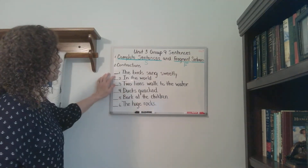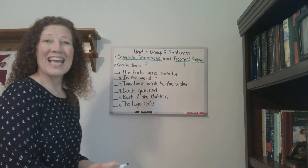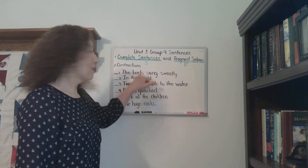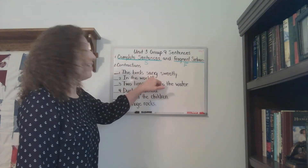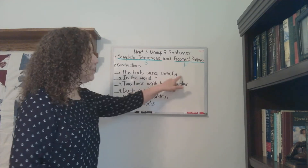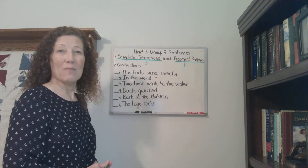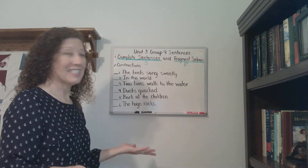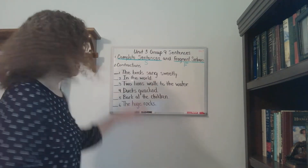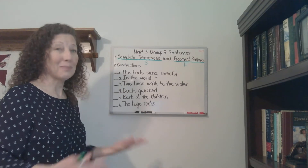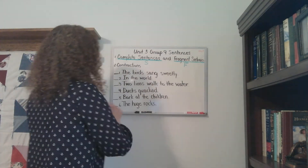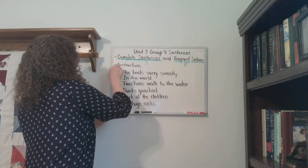Alright, let's look at number one: The birds sang sweetly. Well, we have birds — that's our subject. We have sang — that's our verb. It starts with a capital letter and ends with an end mark, a period. Does it make sense? The birds sang sweetly. Yes, it is a complete sentence and a complete thought. If I say that to you, you know what I'm talking about. So this is going to be an S for sentence.